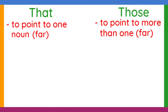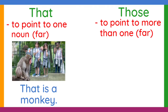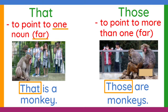Next: that is a monkey. That is used here because the monkey is far from the people watching, and there is only one monkey. And for the pronoun those, we can say, those are monkeys. Why? Because there is already more than one monkey here, and they are far from the people watching.